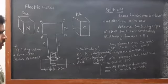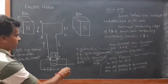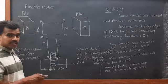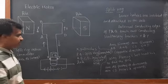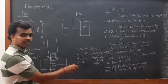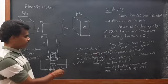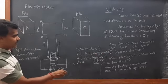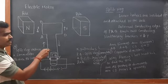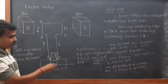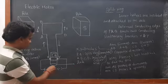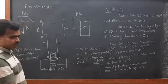Here, X and Y are the brushes — they are stationary. P, Q, R is the split ring, which we also call the commutator. A, B, C, D is the insulated copper wire — A, B, C, D is the insulated copper wire. And this one is the axle.